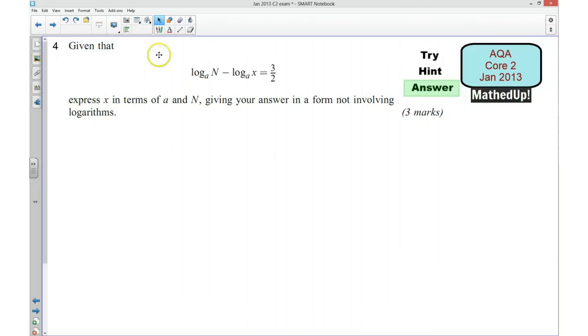I'm now going to go over the full answer to this question. So I'm going to start off by writing this as a single logarithm. So using my log laws I know that if I'm taking away one from another I'm going to do N divided by X. So I'm going to start off by writing the logarithm. We've got log.